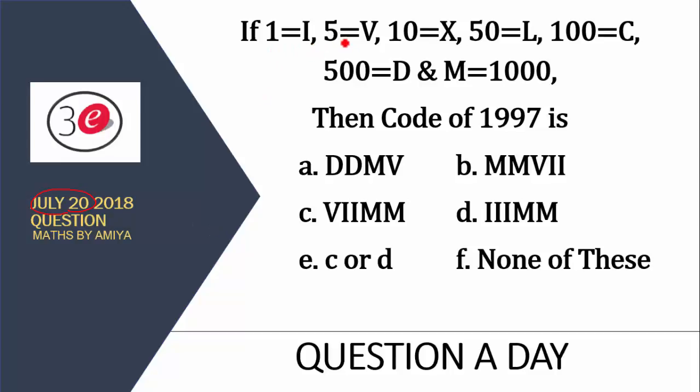If 1 is coded as I, 5 as V, 10 as X, 50 as L, 100 is nothing but C, 500 is D and M is nothing but 1000, then what would be the code of 1997?